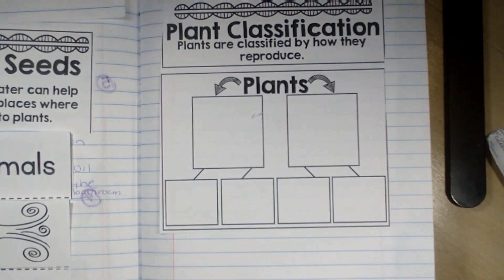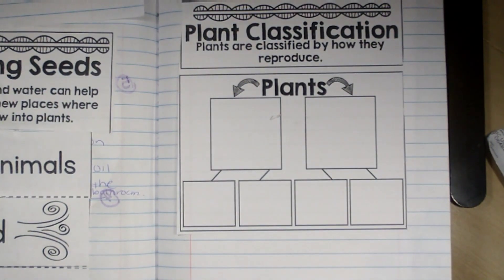All right, let's talk plant classification. So plants can be classified on how they reproduce or how they produce other plants.